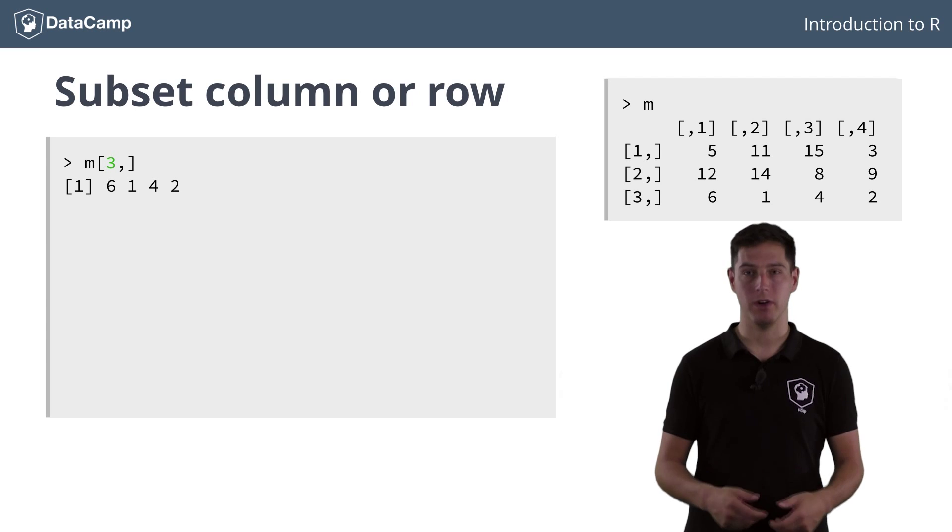To select columns, you can work similarly, but this time the index that comes before the comma should be removed. To select the entire third column, you should write m. Again a vector result, this time of length 3, corresponding to the third column of m.